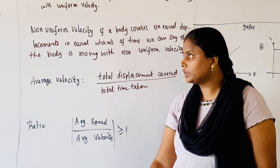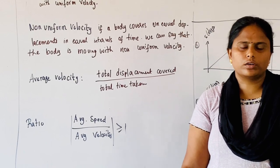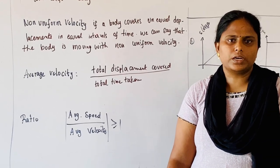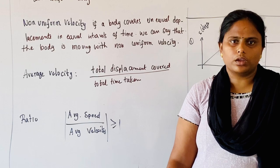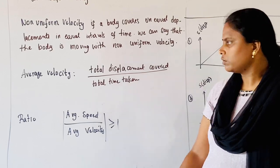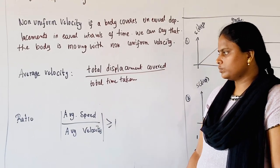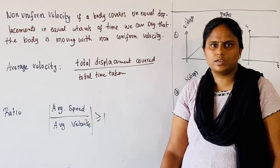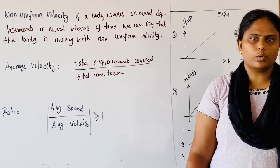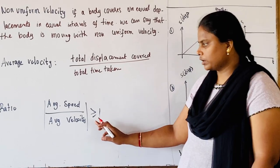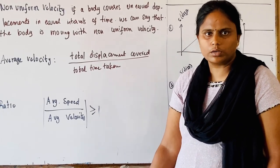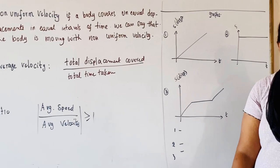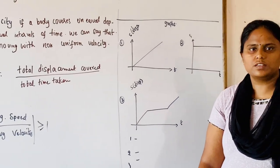One more important point: velocity can be negative, positive, or zero, whereas speed cannot be negative. The ratio of average speed to average velocity is always greater than or equal to 1, and its magnitude is always greater than or equal to 1.